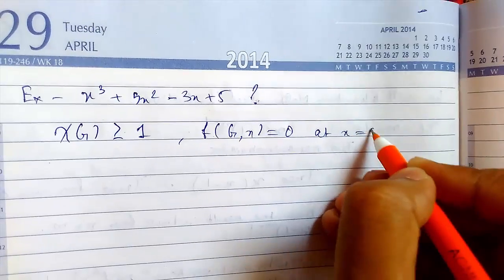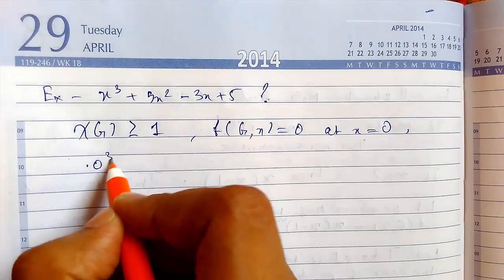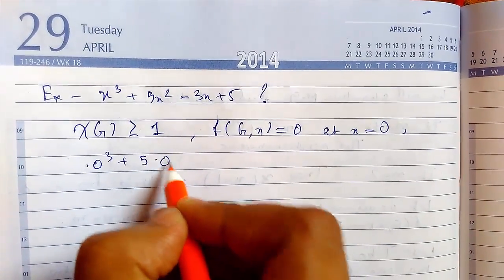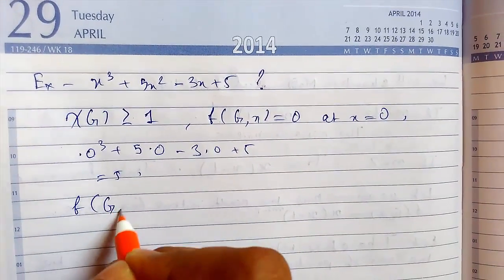But when we put a value of x as 0, we get 0q plus 5 times 0 minus 3 times 0 plus 5, so we get 5. So f of g comma 0 we get as 5.